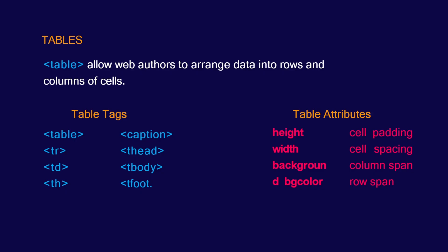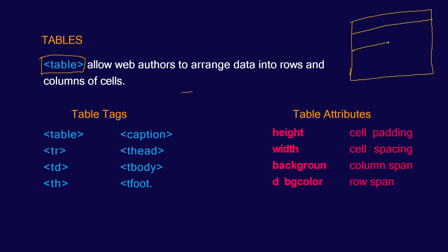Next we look at the table tag. If you want to create a table in your page to show certain data, you need to add a table tag in HTML. Once you add a table tag the browser understands you're going to create a table. Inside the table tag you have certain tags. To create rows you use the tr tag, that is table row.